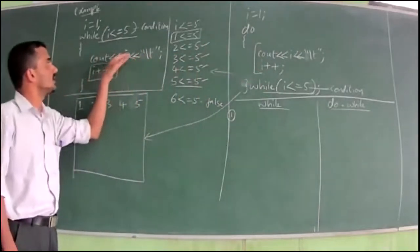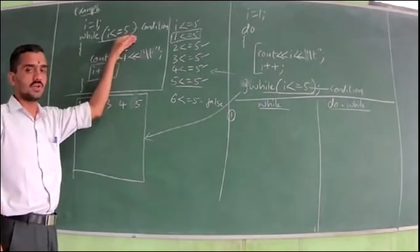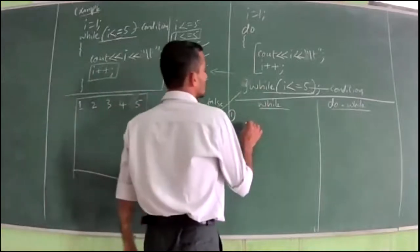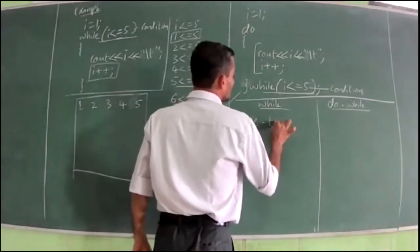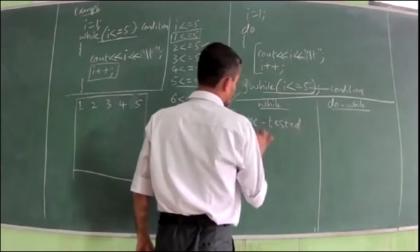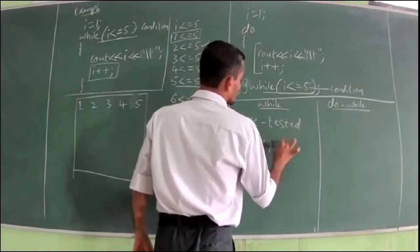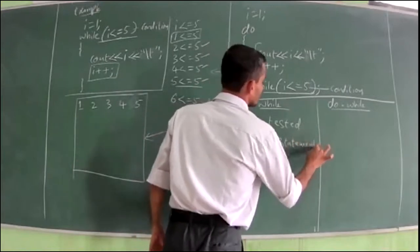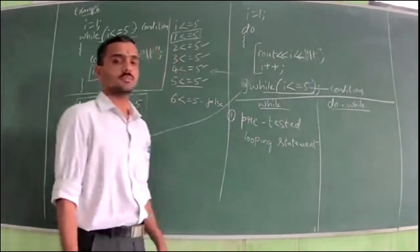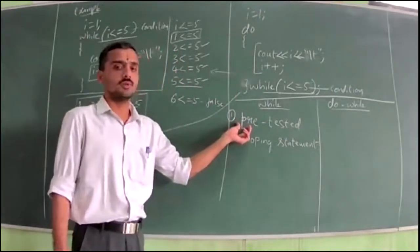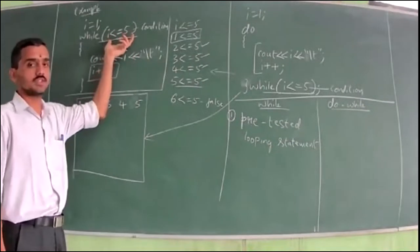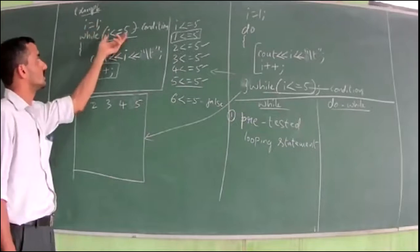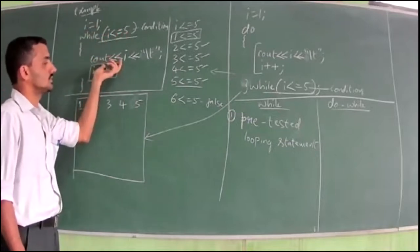In case of while loop, condition is checked first — that is at the beginning of the loop. So it is called a pre-tested looping statement. Pre means before. Before the execution of statements, condition is checked. If you look at the code from top to bottom, first condition is checked, then the statements are executed. So it is called pre-tested — before only we have to test the condition.